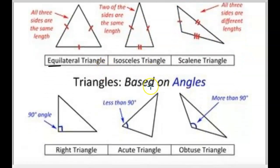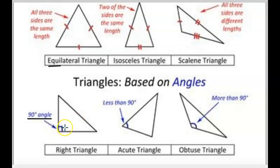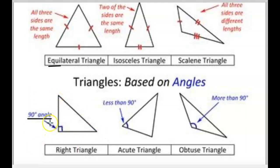Now you have triangles that are based on the angles that they make. This one is called the right triangle — it's a 90 degree angle. What you have to remember about a right angle is it has this little square. A little square can always fit in the corner perfectly. It's perfectly vertical and perfectly horizontal, making a nice, perfect straight L. That's your right triangle.